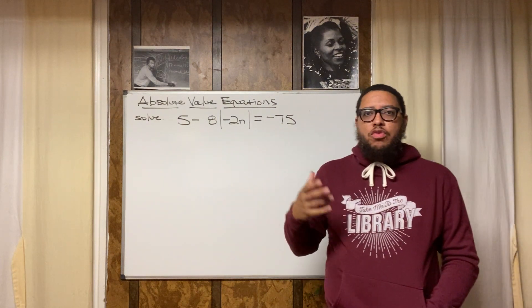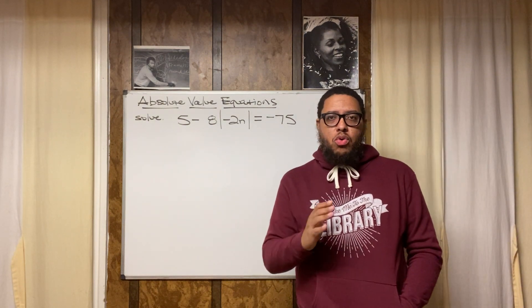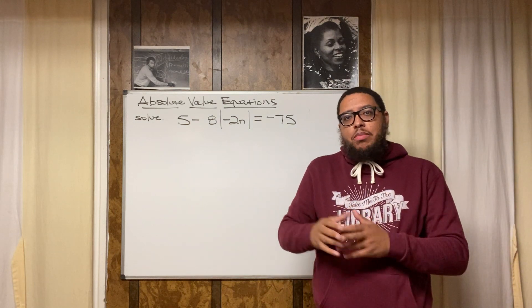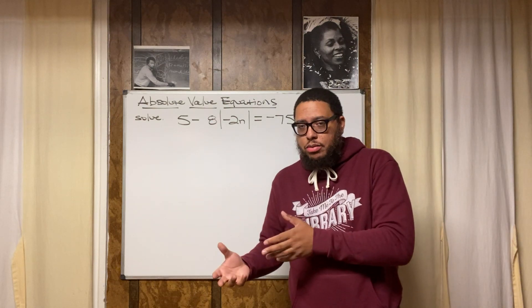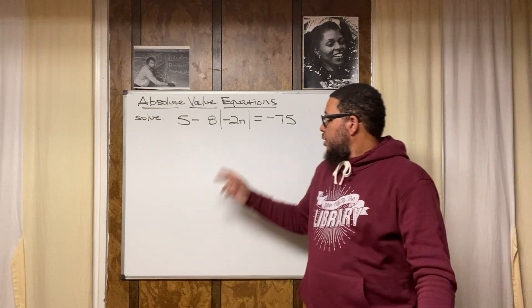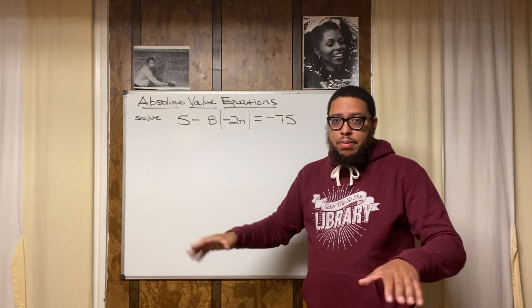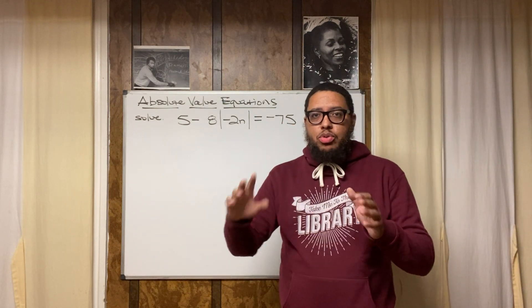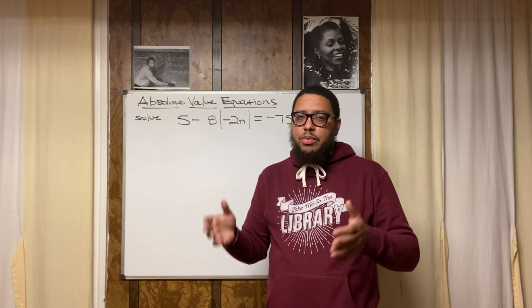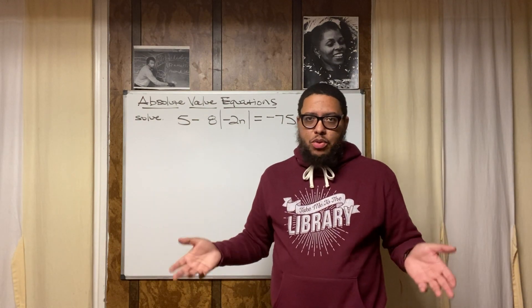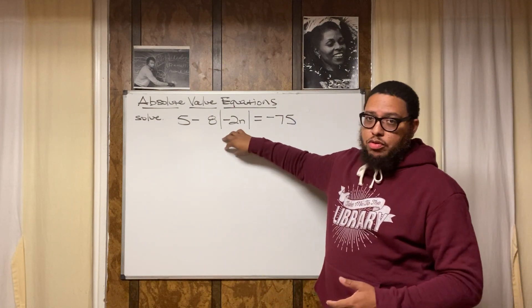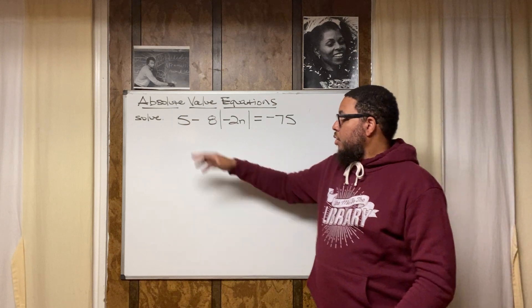So let's get started. When we solve absolute value equations, our first goal is to isolate the absolute value. After we isolate the absolute value — basically solving for it — we get rid of the absolute value bars and create our two separate equations. Then we solve for the variable the traditional way we solve for a variable in an algebraic equation. The first step is to isolate the absolute value.